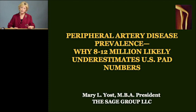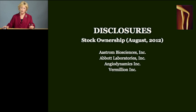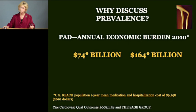This morning I'd like to talk to you about the prevalence of PAD, and specifically why the 8 to 12 million number looks to be understating the prevalence estimates of PAD. Before we get into the presentation, I do have some disclosures. The Sage Group is a for-profit research and consulting company. We sell our products and services to industry, and we do own stocks relevant to this discussion.